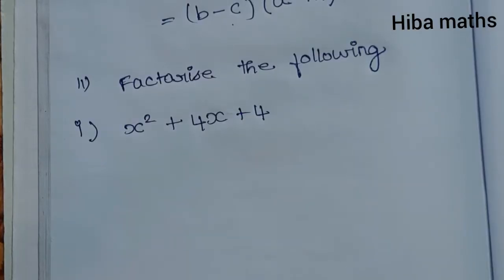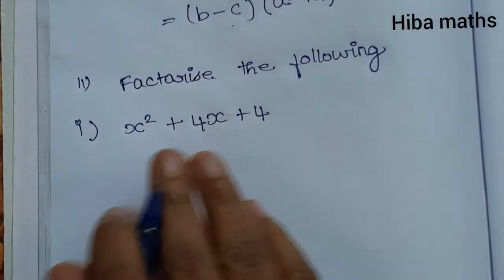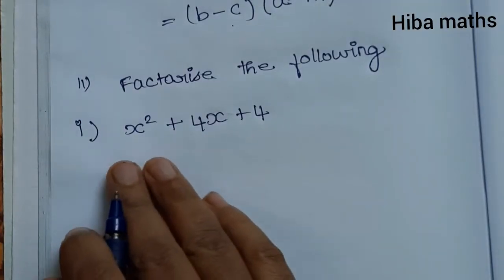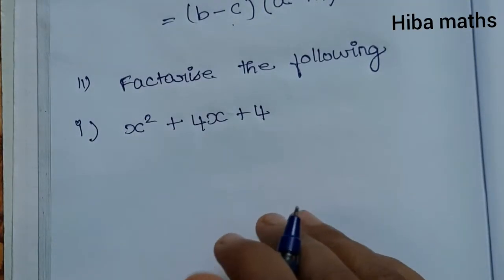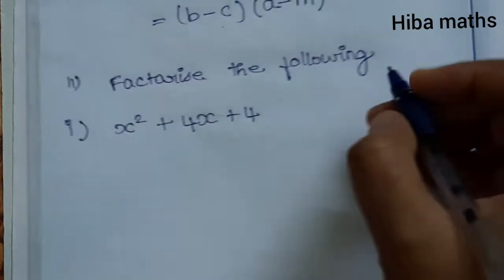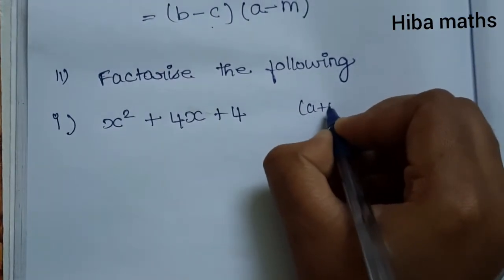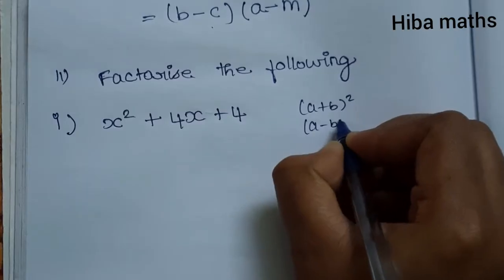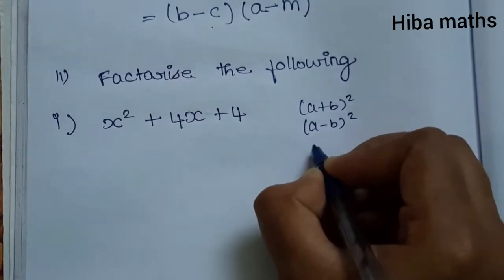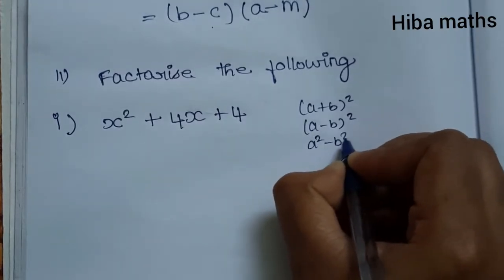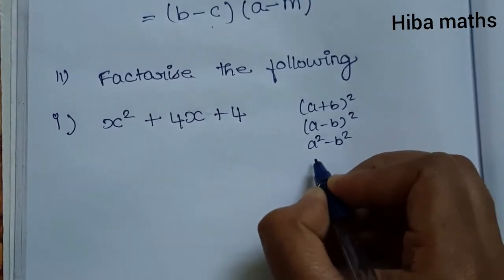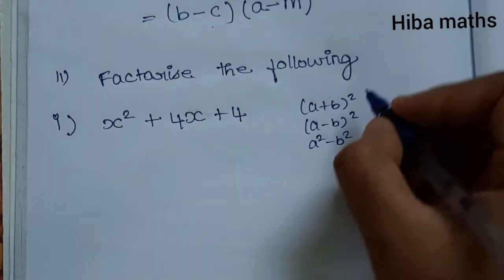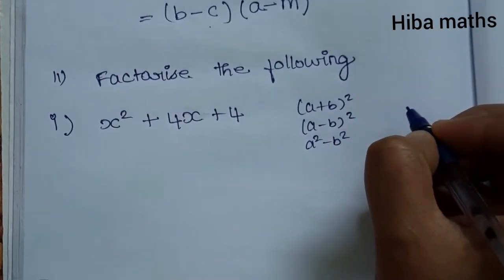The question is x² plus 4x plus 4. This is a common type. To solve this sum, we will use formulas: either (a+b) whole square, (a-b) whole square, or a² minus b² . We will use these three formulas, and we will know how to apply them.